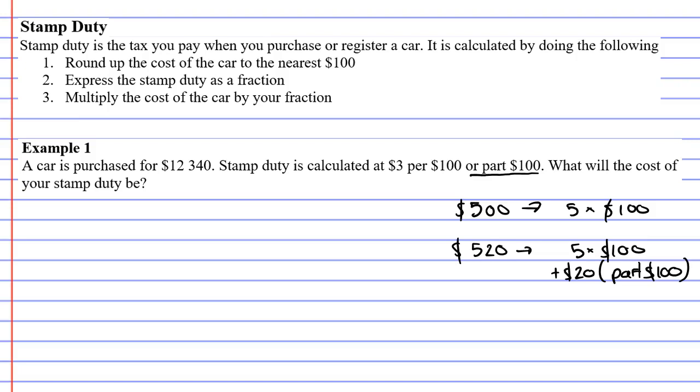So when we look at this large amount here, you've actually got one hundred and twenty-three lots of $100, and then you've got your $40 which represents your part $100. Okay, so that's what we're trying to talk about here.